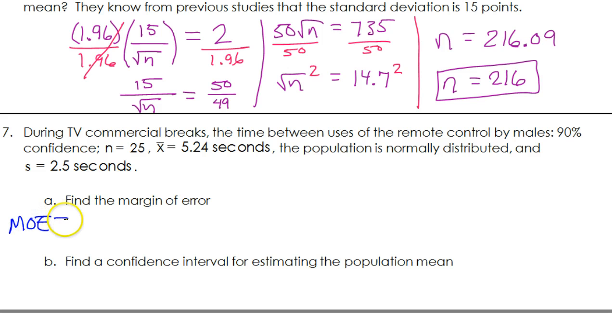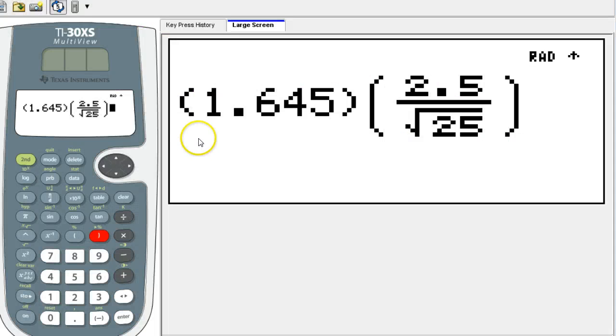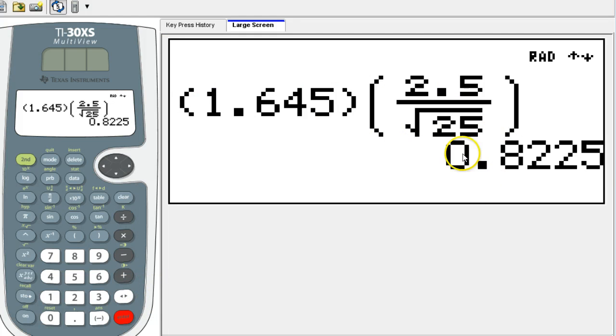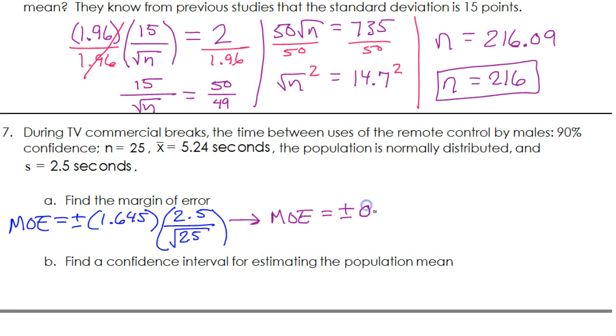Find the margin of error. So margin of error equals plus or minus 1.645 times standard deviation 2.5 seconds divided by square root of the sample size. They told us n is 25 straight up. That's all we need to find the margin of error. So we will just put this in our calculator. 0.8225. I'm just going to leave it as 0.82. So there's my margin of error, 0.82 seconds.